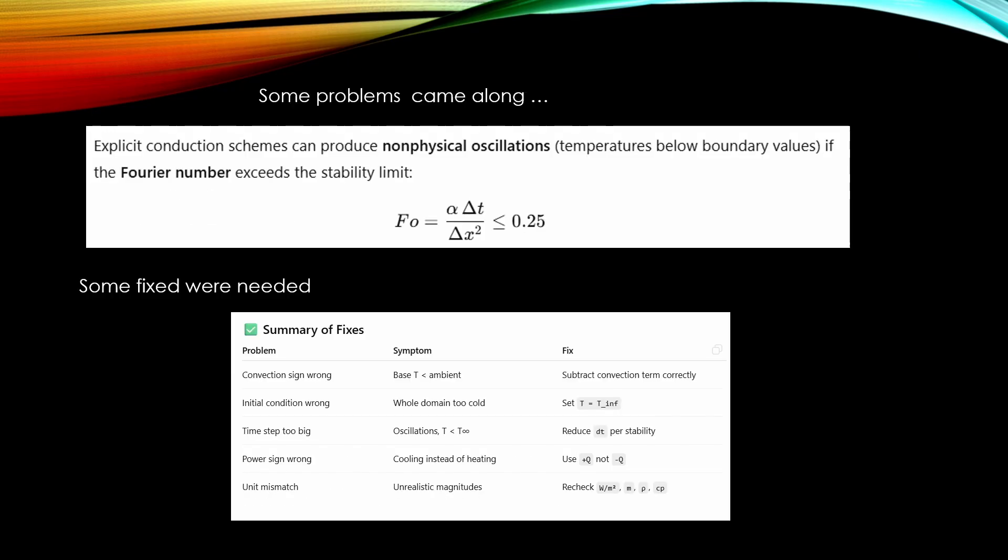When I started simulations some problems were arising. For example the material temperature was going below the temperature of our cooling air, which is not possible. Also the temperature was oscillating quite a lot. And I was telling ChatGPT that this is my problem. What to do now? And it was making changes to the code. And what is good when you are working with ChatGPT is that it is making this kind of very good summary of those changes.